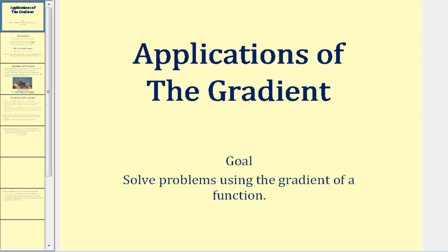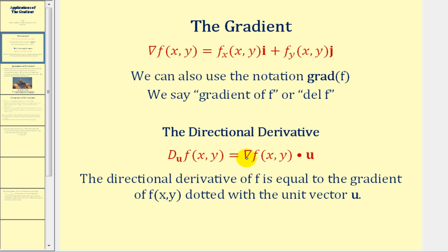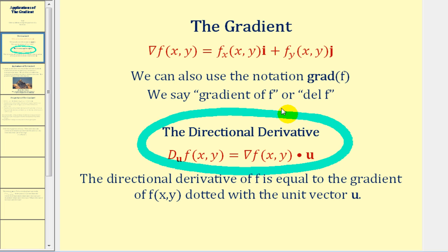Welcome to a video on the applications of a gradient. We first mentioned the gradient when discussing the directional derivative in the previous video. In this video we'll take a look at specifically what the gradient tells us given a function in terms of two variables. Remember the gradient of f is equal to the vector in which the x and y components are formed by the partial derivatives of f with respect to x for the x component and the partial with respect to y for the y component.